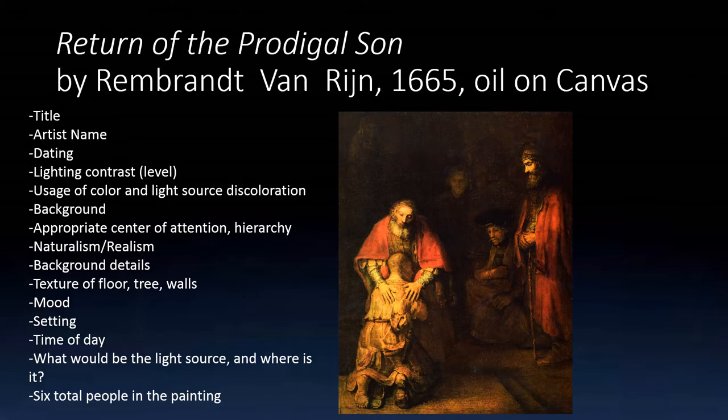Rembrandt van Rijn's Return of the Prodigal Son is dated to be made in 1665, during the Dutch Golden Age within the Renaissance Era. It is oil on canvas, and it is located in the Hermitage Museum at St. Petersburg, where it was acquired in 1766.